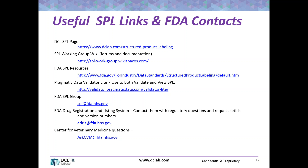In terms of priorities, the most important resource is the FDA SPL resources page. It has lots of useful links. You can go and find all the different validation lists that the FDA uses. They have training sessions. We highly recommend that you have that link in your bookmarks if you don't already have it.